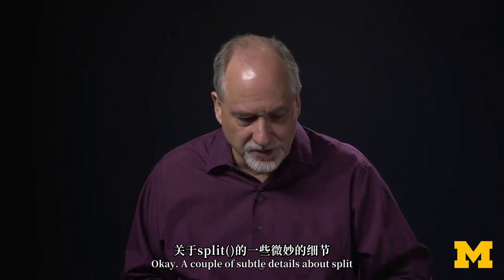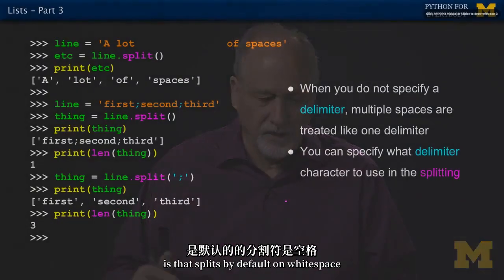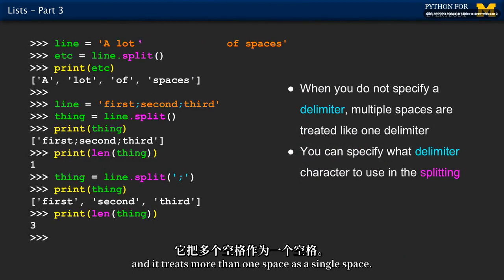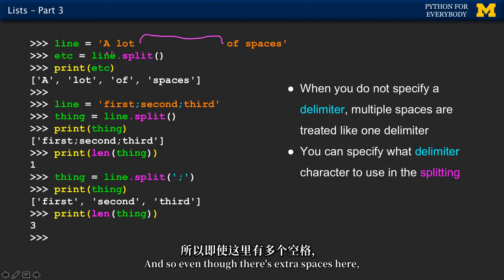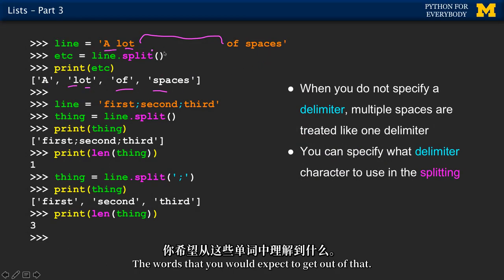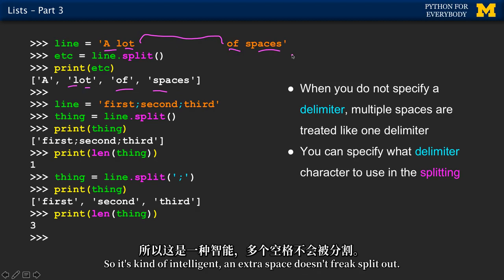A couple of subtle details about split: split defaults to splitting on white space, and it treats more than one space as a single space. So even though there are extra spaces in a string and we split the line, we still get the words you'd expect. An extra space doesn't freak split out - it's kind of intelligent.